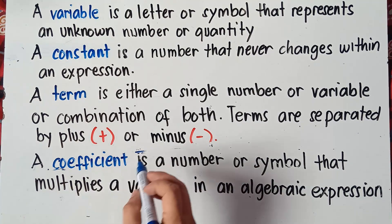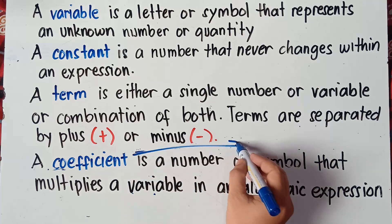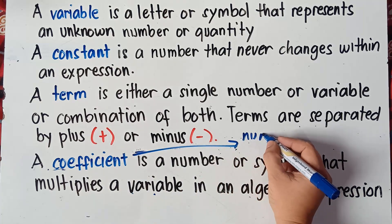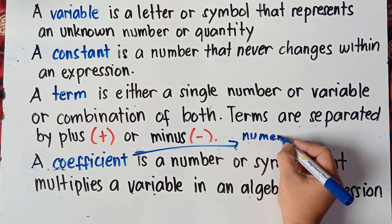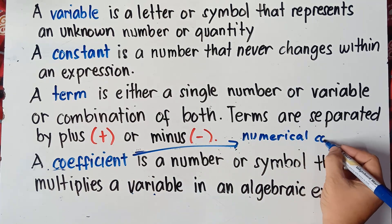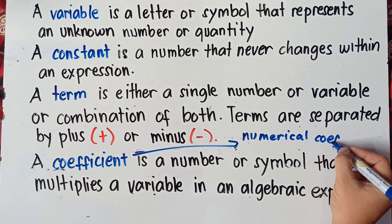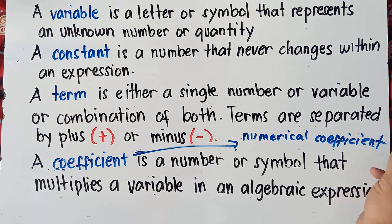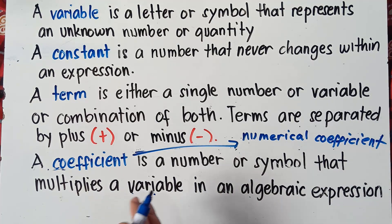A coefficient is a number or symbol that multiplies a variable in an algebraic expression. Sometimes this coefficient is called a numerical coefficient — it is the number that multiplies a variable.